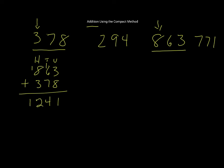Another way of doing it is if we take 863 and we add 378. This is another way of doing it - it's not the compact method, but you might be able to see how the carrying works.